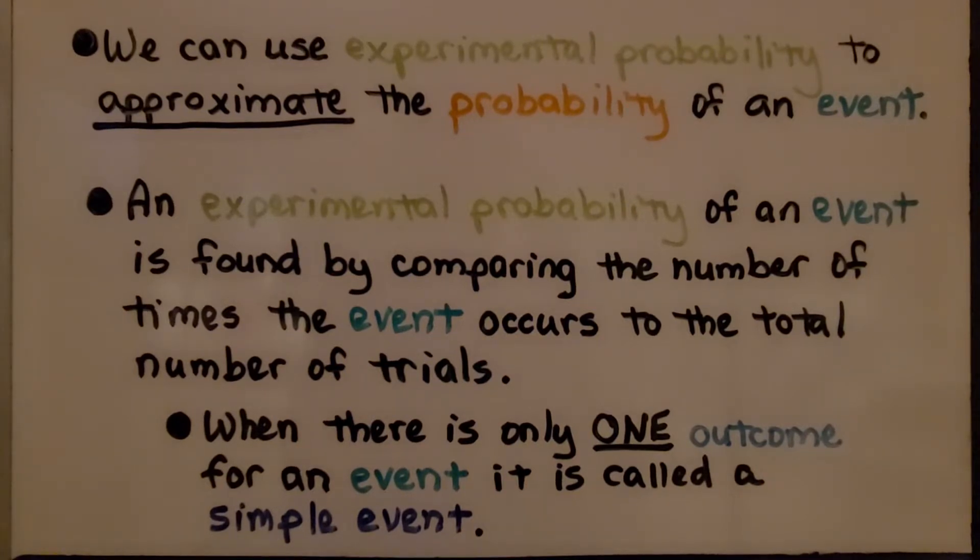An experimental probability of an event is found by comparing the number of times the event occurs to the total number of trials. When there is only one outcome for an event, it is called a simple event.